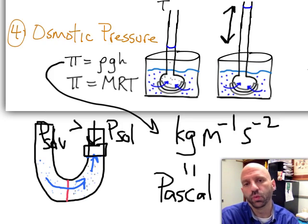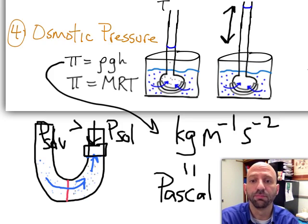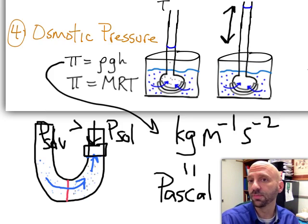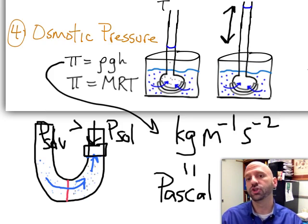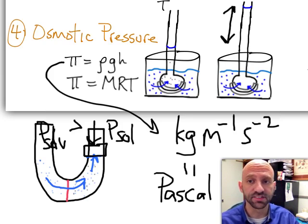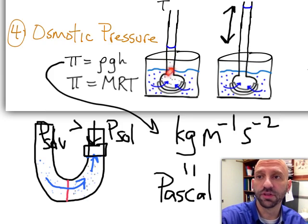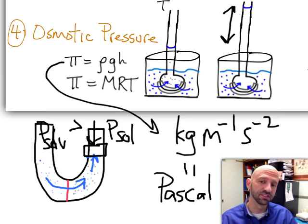And like we showed with the colligative properties of boiling point change or freezing point change, we can use osmotic pressure to measure things like the molar masses of the unknown solute that might be inside of our bulb system here.